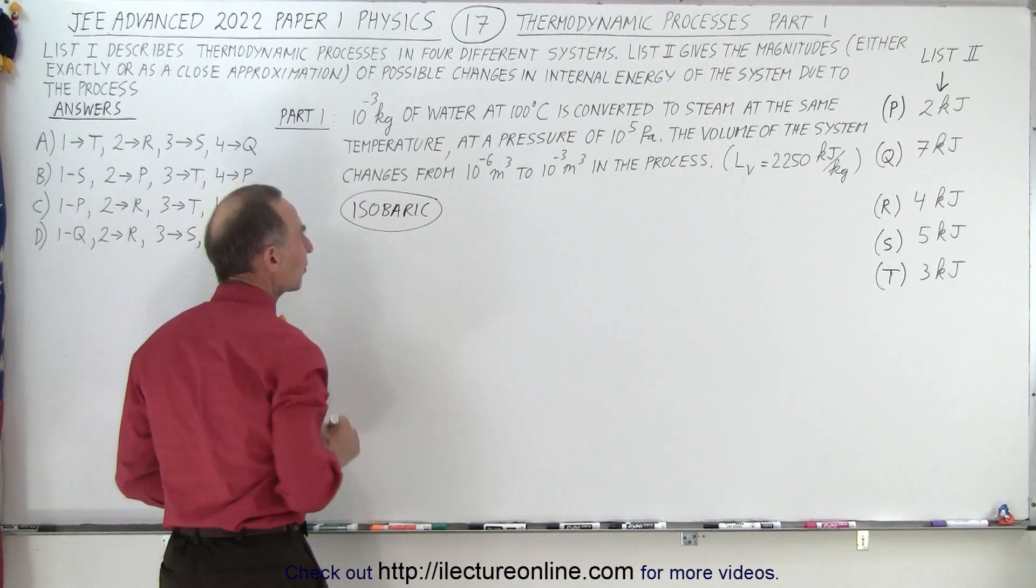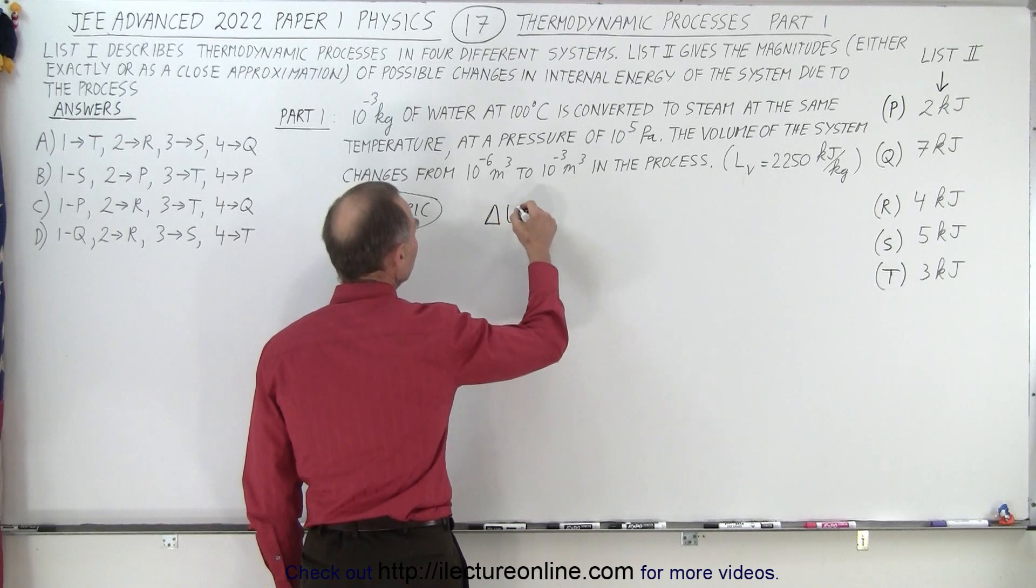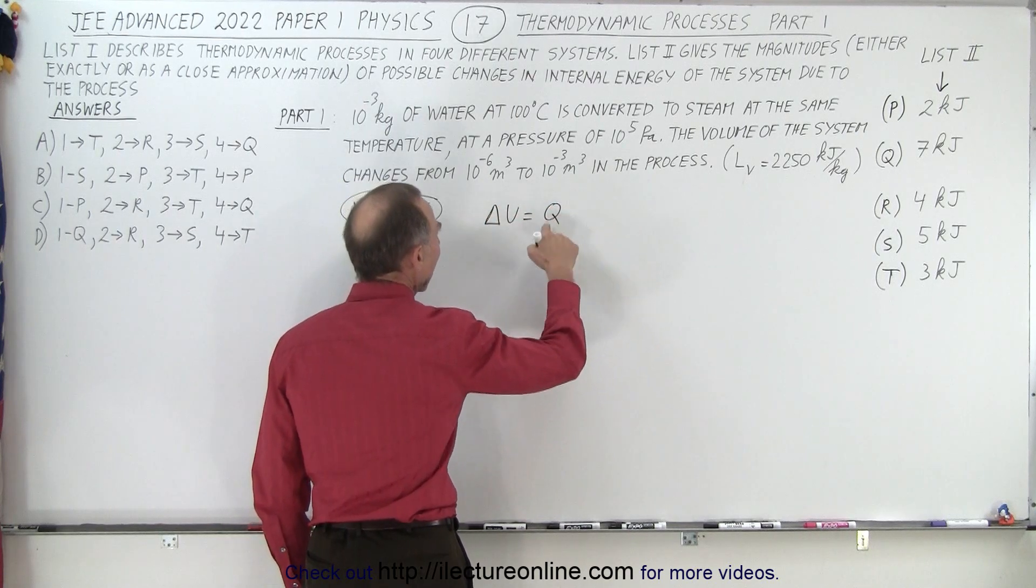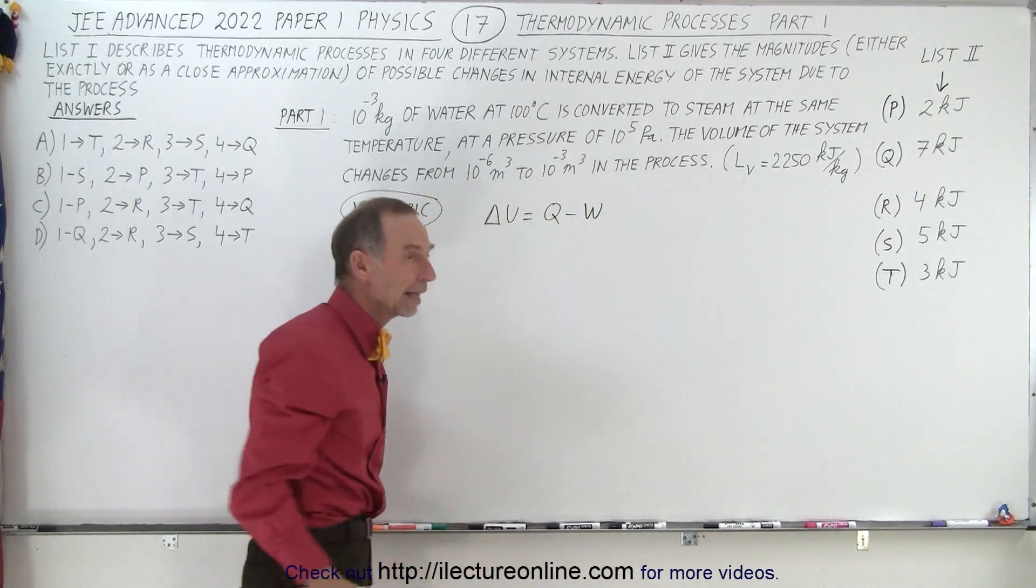So we have an isobaric process, and they want us to find the change in internal energy. The change in internal energy equals the heat added to the system minus the work done by the system or by the gas.